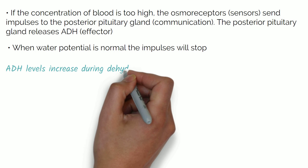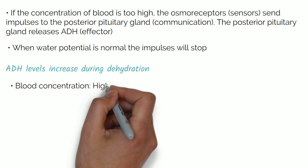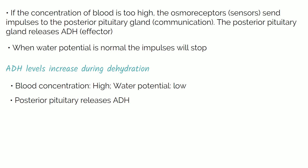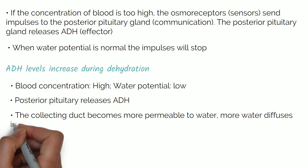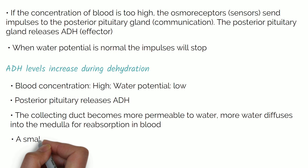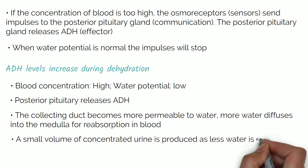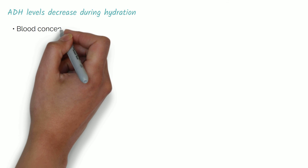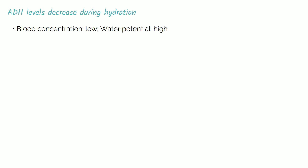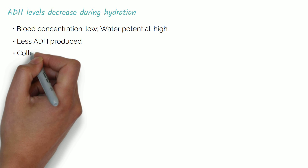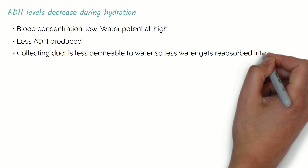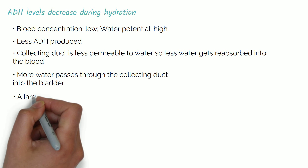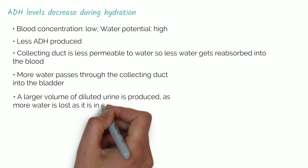During dehydration, blood concentration is high and water potential is low. The posterior pituitary releases ADH, the collecting duct becomes more permeable to water, and more water diffuses into the medulla for reabsorption into the blood. This produces a small volume of concentrated urine, so less water is excreted. During hydration, blood concentration is low so water potential is high; less ADH is produced, the collecting duct is less permeable to water, and less water gets reabsorbed into the blood. More water passes through into the bladder, producing a larger volume of dilute urine as more water is lost as it is in excess.